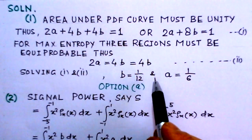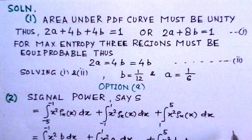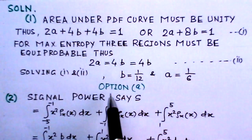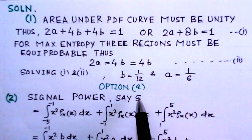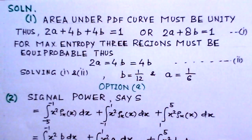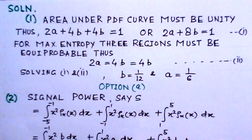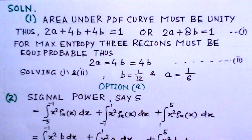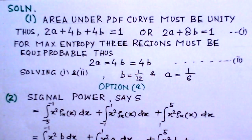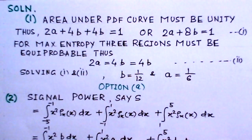Solving gives the values for the probability density functions, which corresponds to option A. This is straightforward. For Part 2, we need to find the signal-to-quantization noise ratio. We determine the signal power and the quantization noise power, then take their ratio.